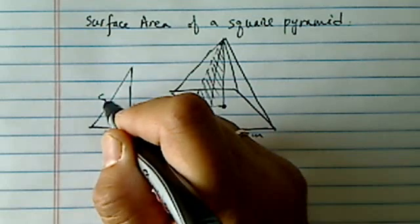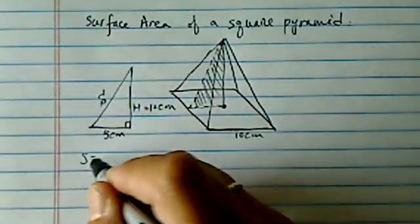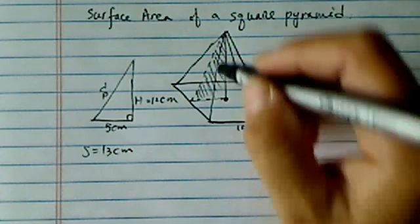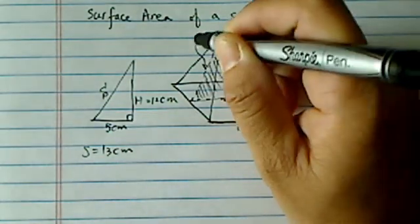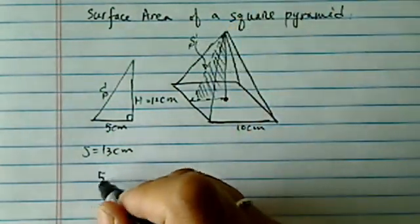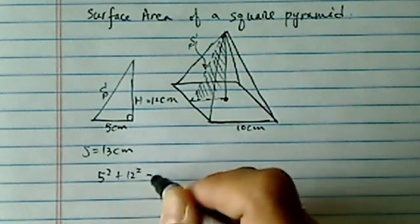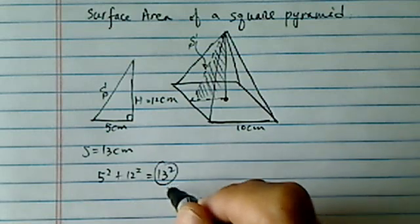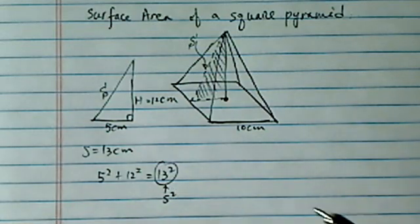This is 5 cm. Now, we were given the slanted line as equal to 13 cm. Now, even if they didn't give us this one, we could use the Pythagorean theorem. This will give you 13 squared. Okay, so this one is really equal to S squared.